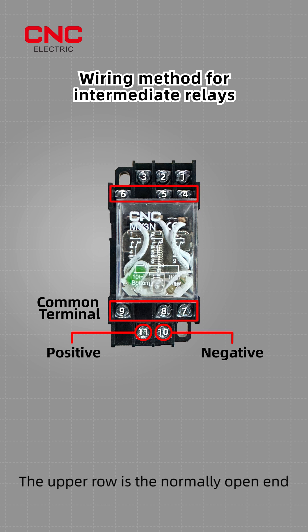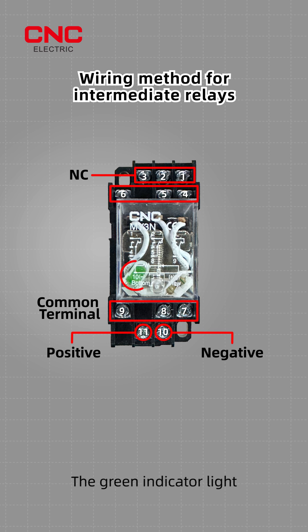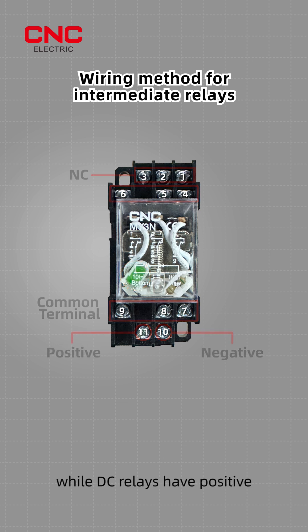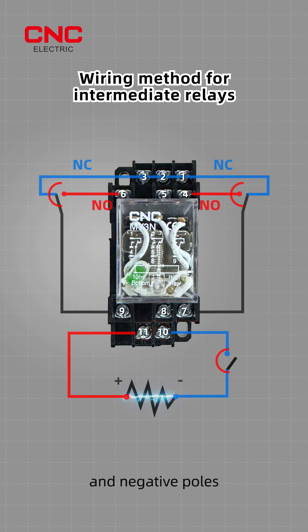The upper row is the normally open end, and the top row is the normally closed end. The green indicator light signifies DC power supply. AC relays are non-polar, while DC relays have positive and negative poles.